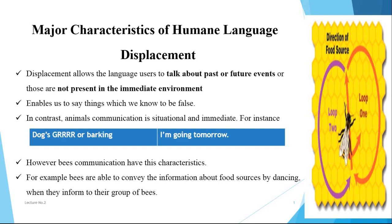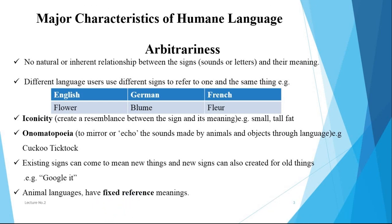In contrast, animal communication is situational and based on immediate environment or context. For instance, a dog's barking is in response to whatever prompted the barking, and their barking cannot really be used to express meaning before or after the events. However, human communication is limitless. Bees are a partial exception — they are able to convey information about food sources by dancing to inform other bees.